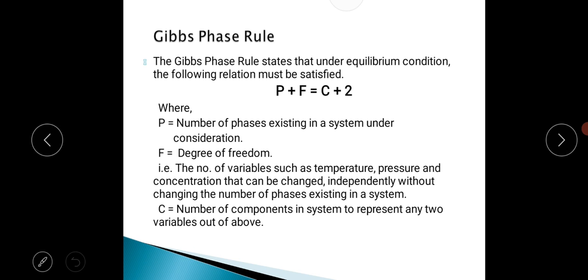The Gibbs phase rule states that under equilibrium condition, the following relation must be satisfied: P + F = C + 2, where P is the number of phases existing in a system under consideration, F is the degree of freedom - the number of variables such as temperature, pressure, and concentration that can be changed independently without changing the number of phases existing in a system, and C is the number of components in a system to represent any two variables out of above.